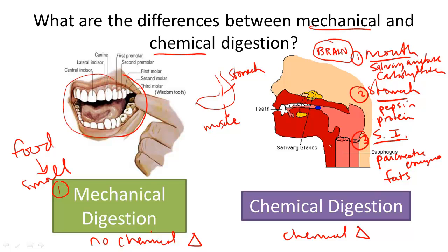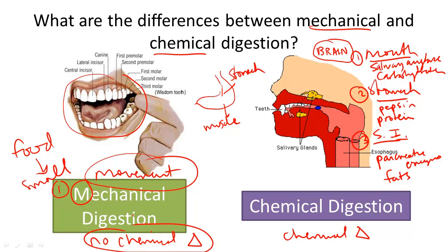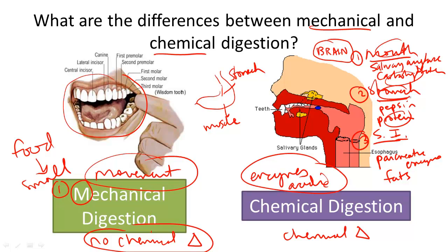Things to remember: Mechanical digestion — think M for movement. Teeth crushing food and the pushing-pulling force, but it's not a chemical change. Chemical digestion uses enzymes or an acidic environment to break down foods. Carbs are broken down mainly in the mouth. Proteins mainly in the stomach. And fats mainly in the small intestine.